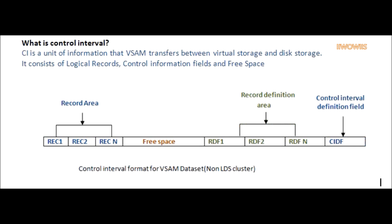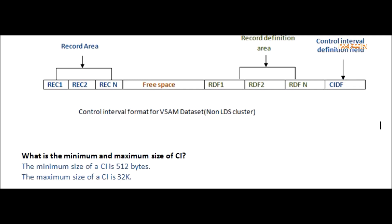Question: What is Control Interval? Answer: Control Interval is a unit of information that VSAM transfers between virtual storage and disk storage. The internal structure of a Control Interval consists of a Record Area, Free Space, Record Definition Area, and Control Interval Definition fields.